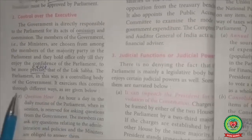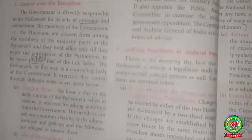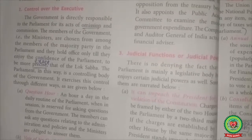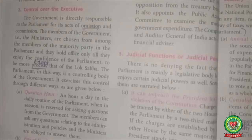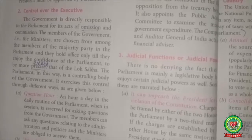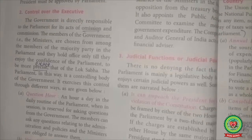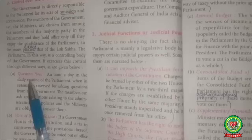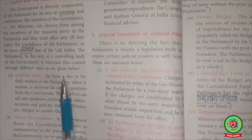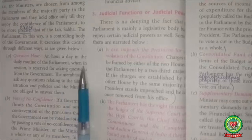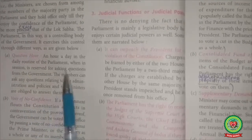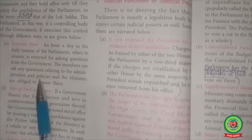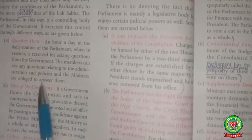Parliament exercises this control through different ways. It keeps a day-to-day watch over the activities of the executive. As ours is a parliamentary system of government, the executive is responsible to Parliament for all acts of omission and commission. Question Hour: One hour a day in Parliament's session is reserved for questions from the government. Members can ask any question relating to administration and policies, and ministers are obliged to answer them.